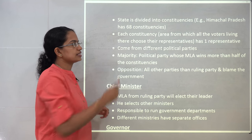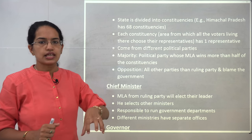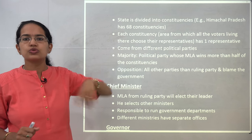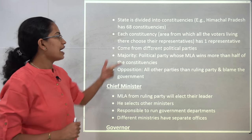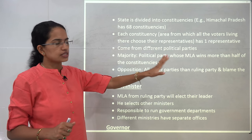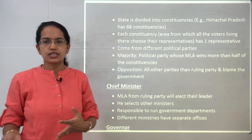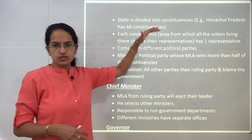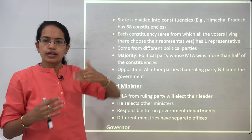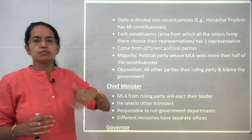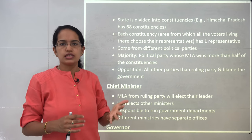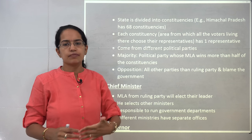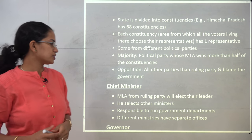A constituency is an area from which voters living in that region choose their own representative, and each constituency has one representative. The example discussed in the NCRT text is of Himachal Pradesh, which had 68 constituencies. If a party wins more than 34 seats, it becomes the majority or ruling party, and the remaining ones go into the opposition.